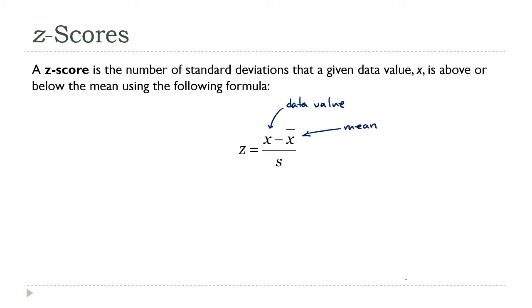So what that gives us, x minus x bar, that's the distance from the data value over to the mean in either direction. And then to get the z-score, we divide that by the standard deviation, and that converts that distance into a number of standard deviations.